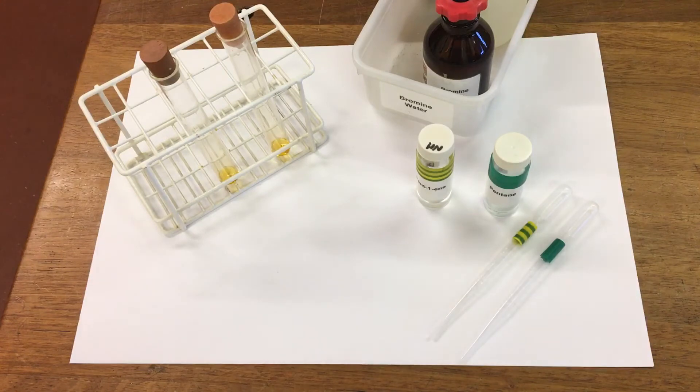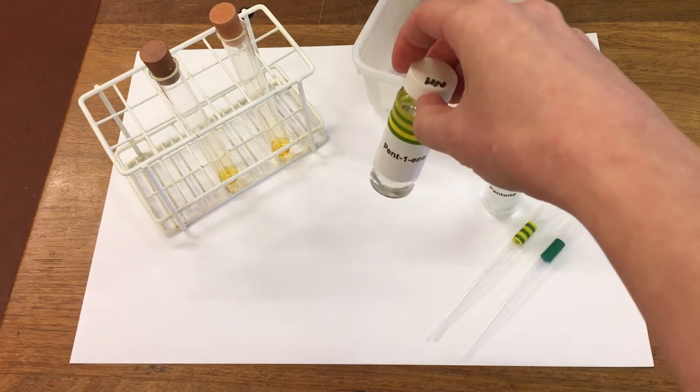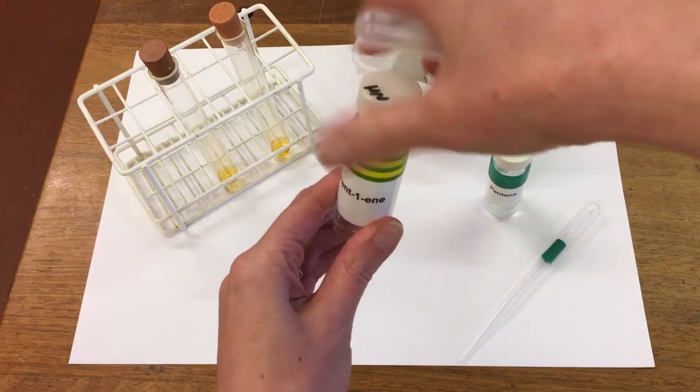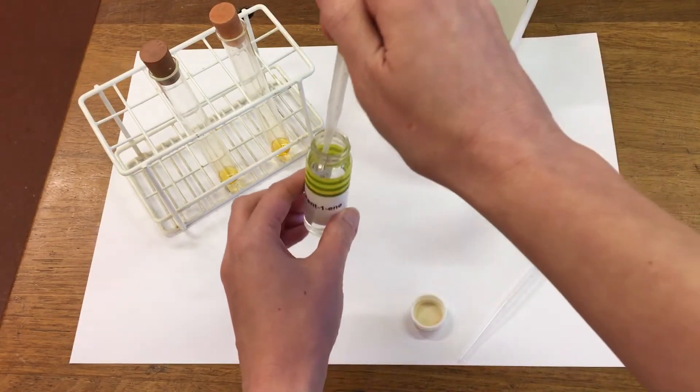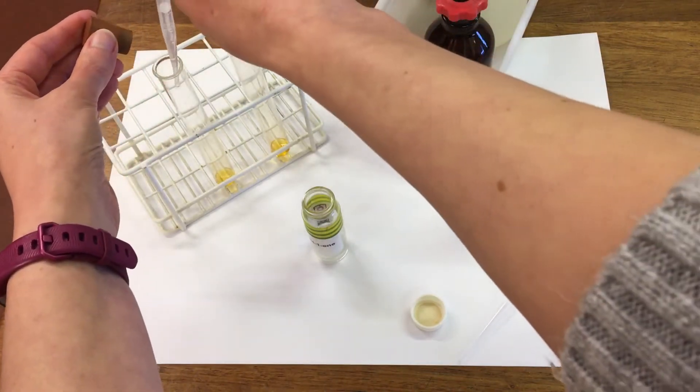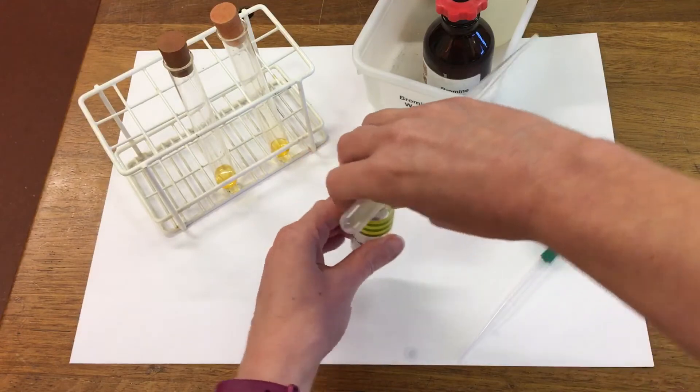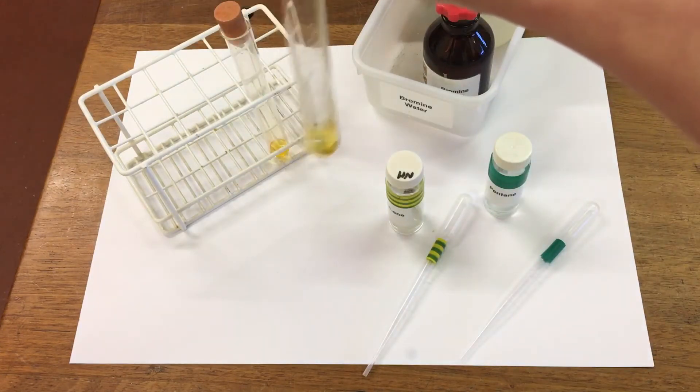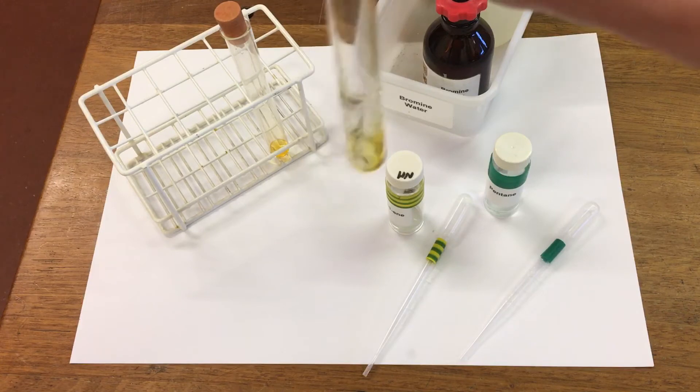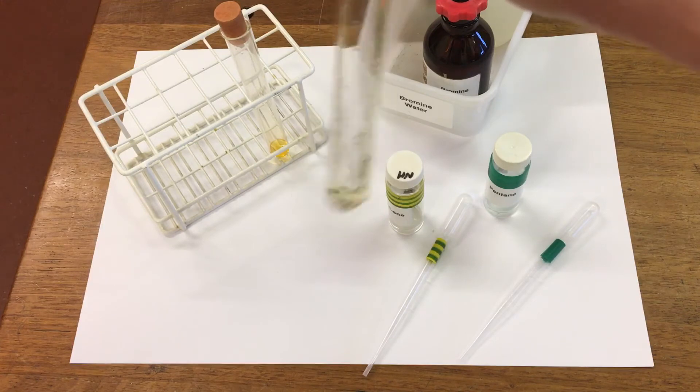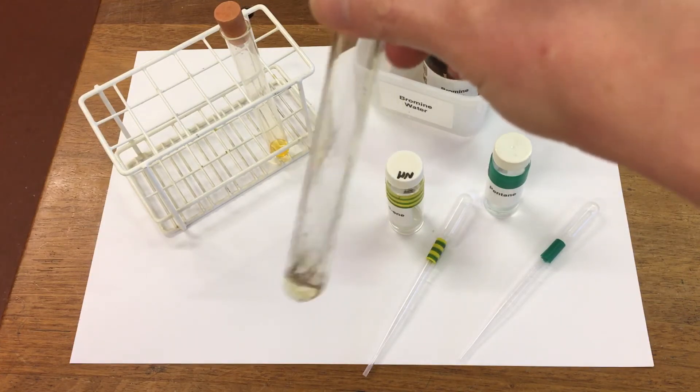Now the first one I'm going to test is pentene. This is an alkene, which is unsaturated. We can see we're losing the color.